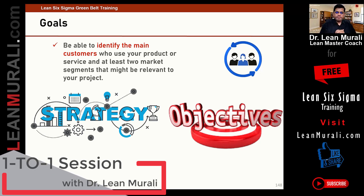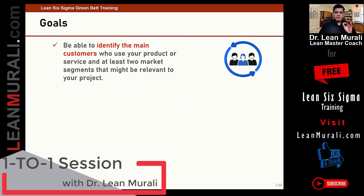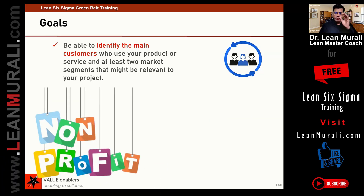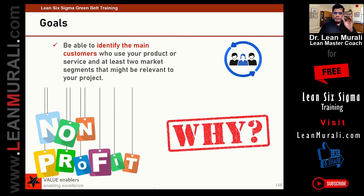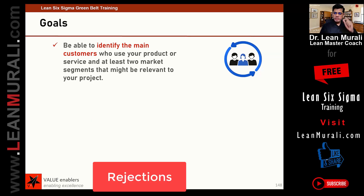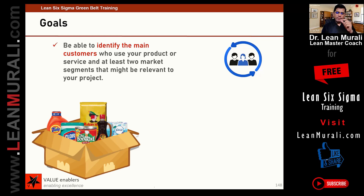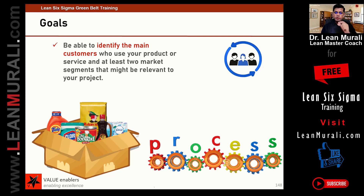What I mean by this is: if the growth is not okay, why is the growth not okay? If the profit is not okay, why is the profit not okay? The growth is not okay because we are not selling more products. The profit is not okay because we are having a lot of rejections and quality issues. From there, you can say which product has a problem and which process has the quality issues.